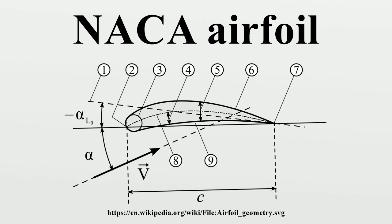Four-digit series: The NACA four-digit wing sections define the profile. For example, the NACA 2412 airfoil has a maximum camber of 2% located 40% from the leading edge with a maximum thickness of 12% of the chord. Four-digit series airfoils by default have maximum thickness at 30% of the chord from the leading edge. The NACA 0015 airfoil is symmetrical, with the 00 indicating that it has no camber, and the 15 indicating that the airfoil has a 15% thickness-to-chord length ratio.